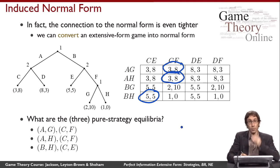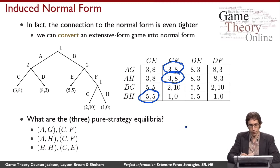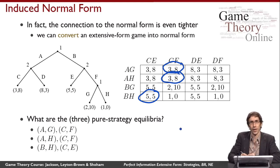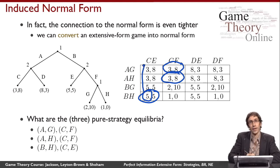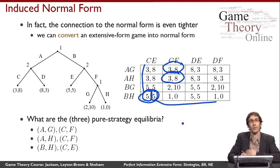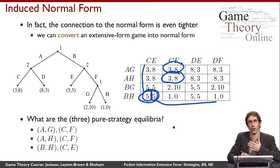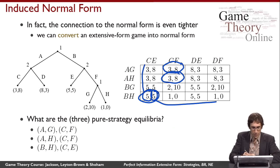To verify these are equilibria, recall that we test by checking, for each player, whether any deviation would give greater utility. For BHCE: if player one deviates, no other action gives him more than five; if player two deviates, no other action gives her more than five. In both cases something ties, but that's fine — a best response just requires there's nothing strictly better. So BHCE is confirmed as an equilibrium.